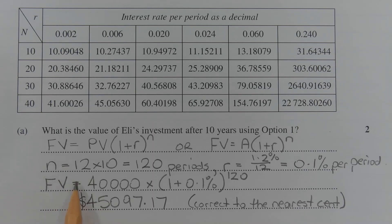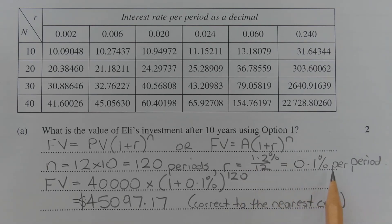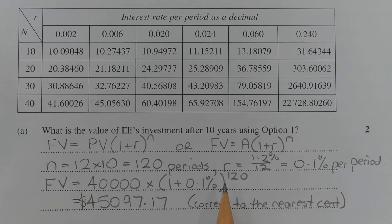In this case, n = 12 compounding periods per year × 10 years = 120 periods in total. r = 1.2% per annum ÷ 12 compounding periods per year = 0.1% per period. So the future value = 40,000 × (1 + 0.1%)^120 = $45,097.17, correct to the nearest cent.